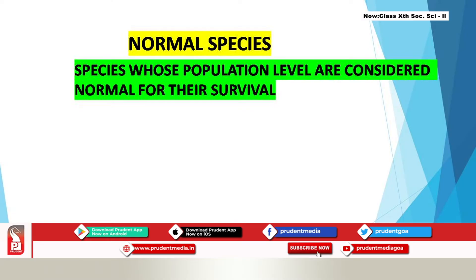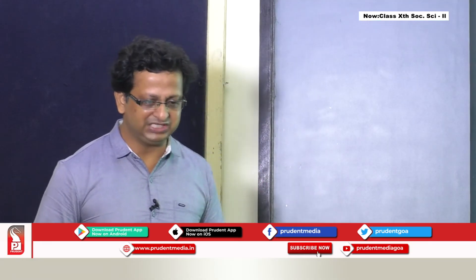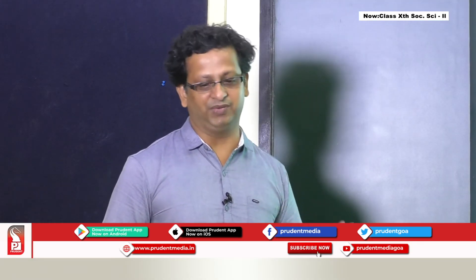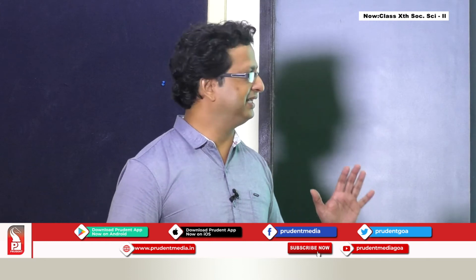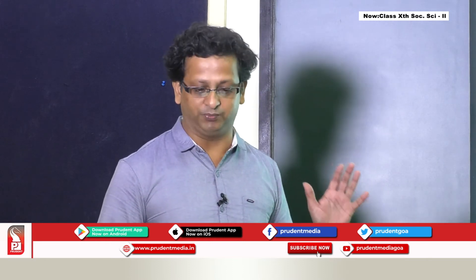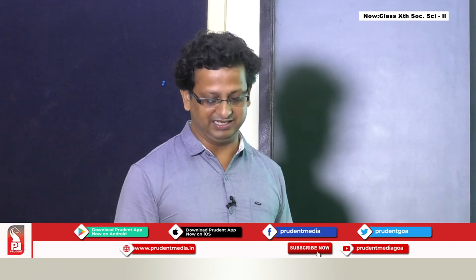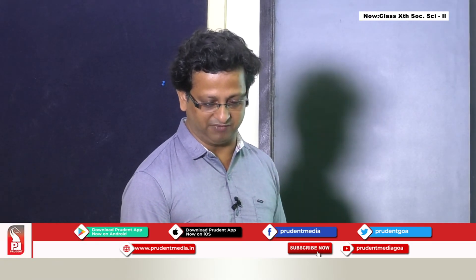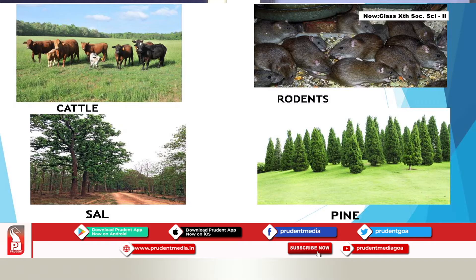Normal species are those species whose population levels are considered to be normal for their survival — their population is stable and they do not face any problems regarding numbers. Examples of normal species are cattle, rodents, sal, and pine.